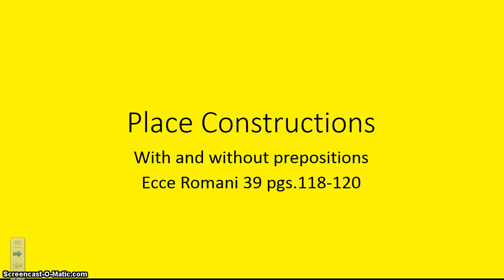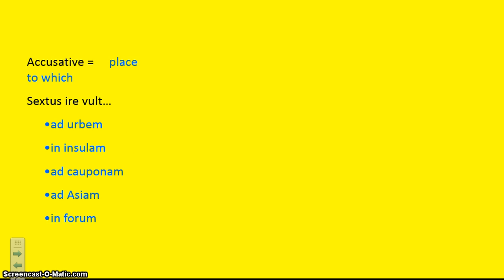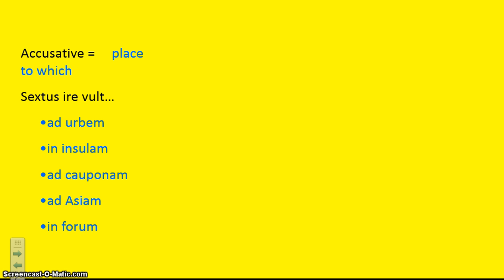Let's get started with place construction. Where typically we see place construction, we see it using prepositions. The first one is with the accusative case, which shows place to which — basically motion toward something — and there are two prepositions we can use. For example, Sextus wishes to go to the city using 'ad urbam', into the apartment with 'in insulam', to the inn with 'ad cuponam', to Asia with 'ad Asiam', or into the forum with 'in forum'. Note that when we use 'in' with the accusative ending, we translate it as 'into'.